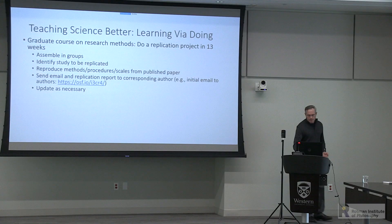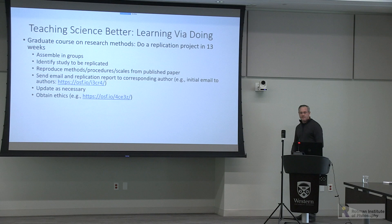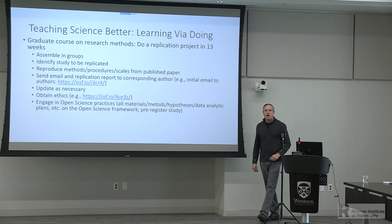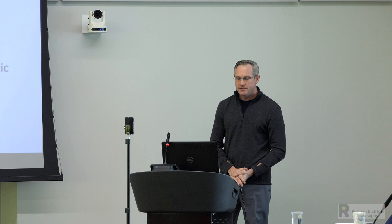After that, we obtained ethics approval, which can take a while. But while we're waiting, we actually write the scripts required to analyze the data based on our initial expectations and what was done by the original authors. Sometimes we'll say: here are some other analyses we'd like to conduct because we didn't think the original analysis was ideal. We also engage in open science practices using the Open Science Framework (OSF.io), creating project pages and putting all study materials, methods, hypotheses, rationale, and data analytic plans up there for everyone to share and see.